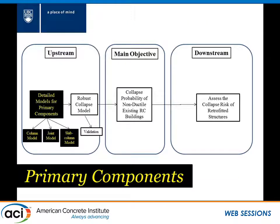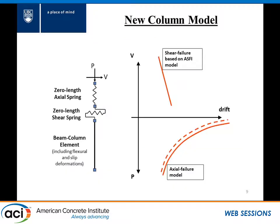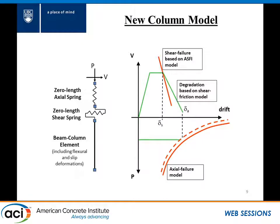For our column model, it's an extension of the model by Elwood and Mailey — a fully mechanical model. The shear failure point is based on the axial-shear-flexure interaction model for flexure-shear columns. After shear failure, the degradation is based on a shear friction model, also mechanical. The axial failure point is based on Elwood and Mailey. These three aspects are represented with an axial spring for axial failure, a horizontal shear spring for shear behavior, and the flexure model captured by the beam column element.